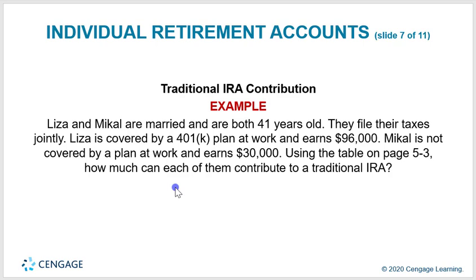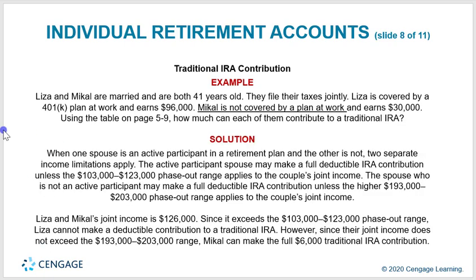Traditional IRA contribution example: Liza and Mikel are married, both 41 years old, filing jointly. Liza is covered by a 401(k) plan at work and earns $96,000. Mikel is not covered by a plan at work and earns $30,000. When one spouse is an active participant in a retirement plan and the other is not, two separate income limitations apply.